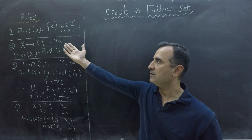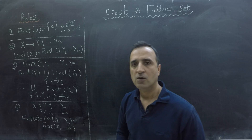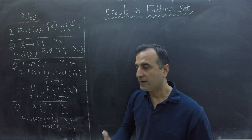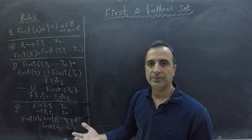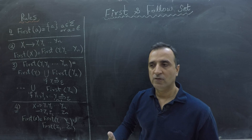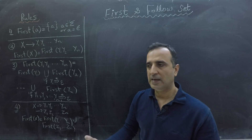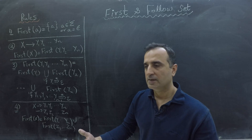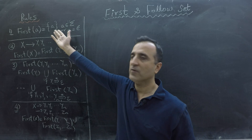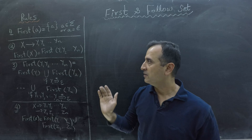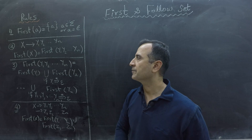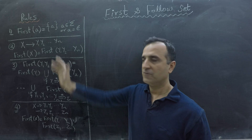Rule number one says that First of a terminal contains that terminal. It also says that First of epsilon, which is the empty string, contains the empty string. This is rule number one, which is regarding computing First of terminals and empty string.